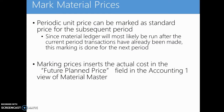Mark material prices. The periodic unit price, which is also known as the actual cost of the material, can be marked as a standard price for the subsequent period. Since material ledger will most likely be run after the current period transactions have already been made, this marking is done for the next period. For example, if you run material ledger for the month of November, you are most likely going to be running it in December. However, in December, material movements will already have been made, so the earliest you can mark the November material ledger cost is in December. When you mark material price, it inserts the actual cost in the future plan plot price field in the accounting one view of the material master.